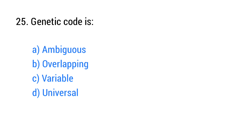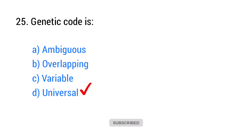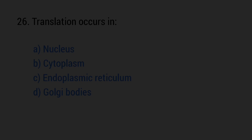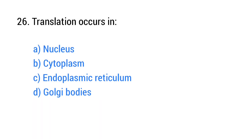Question number 25. The genetic code is? The right answer is option D: Universal. Question number 26. Translation occurs in? The right answer is option B: Cytoplasm.